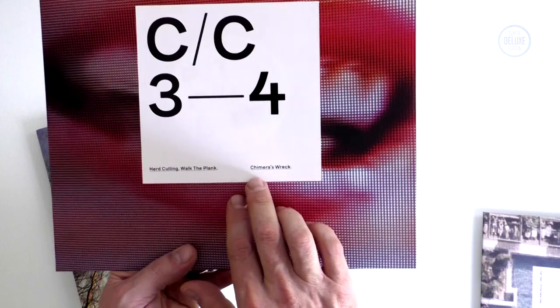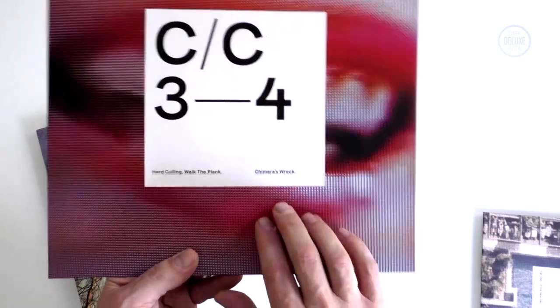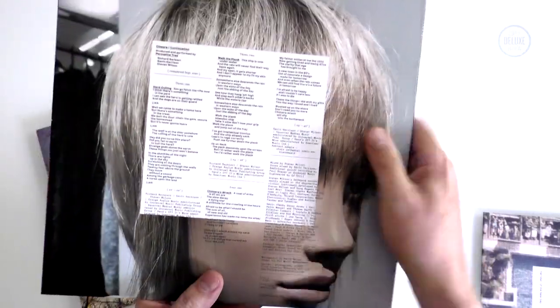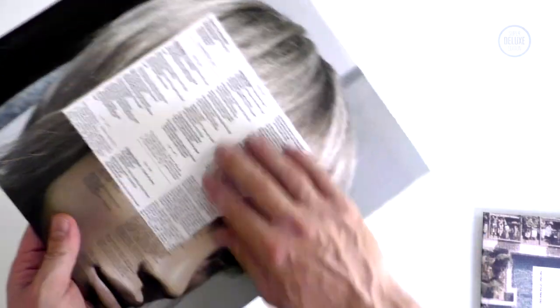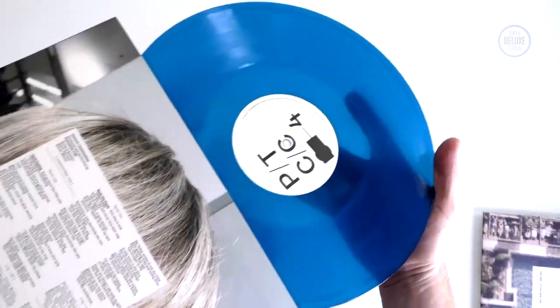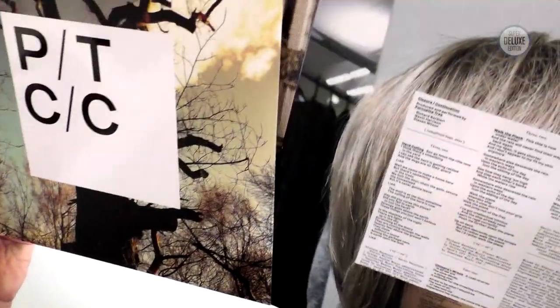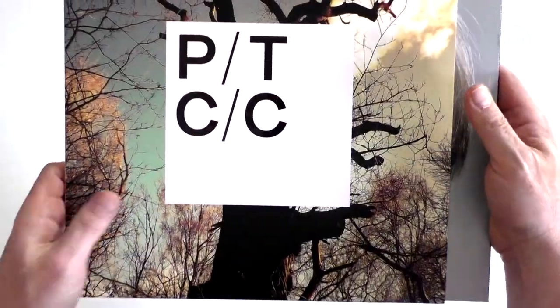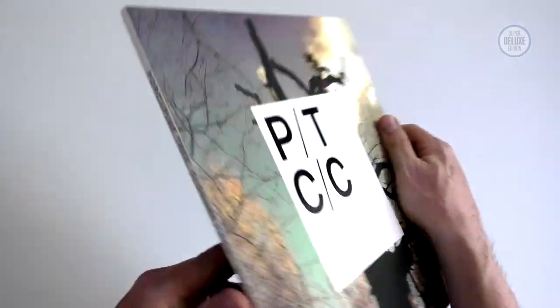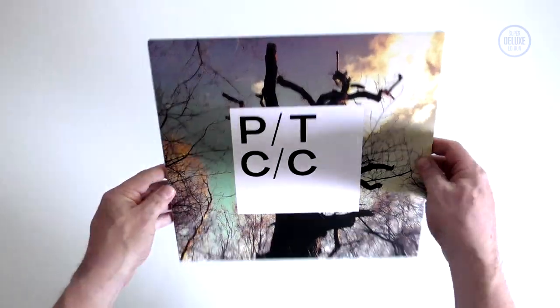The second disc has Herd Culling and Walk the Plank on side three, and Chimera's Wreck which is a long track on its own on side four. More spot varnishing, another blue vinyl record. This is about 30 pounds, so double colored vinyl record with spot varnishing all over the place. 30 pounds is pretty good value I think, especially these days.